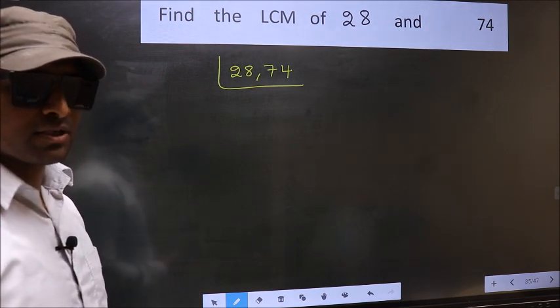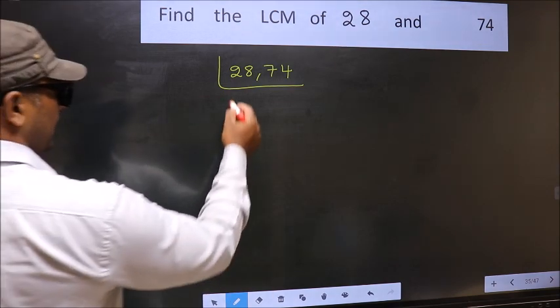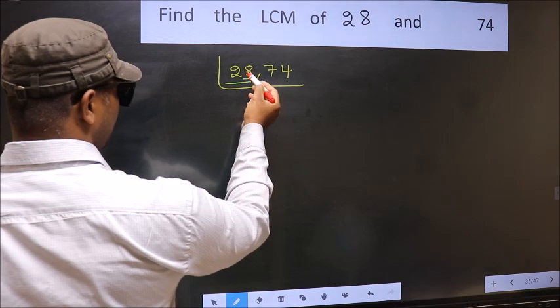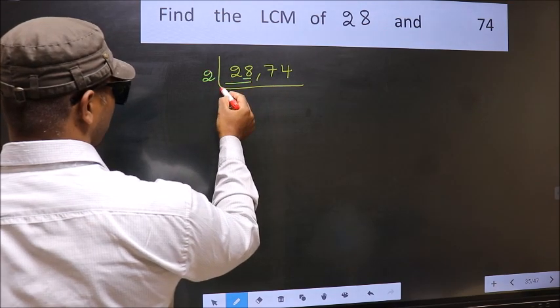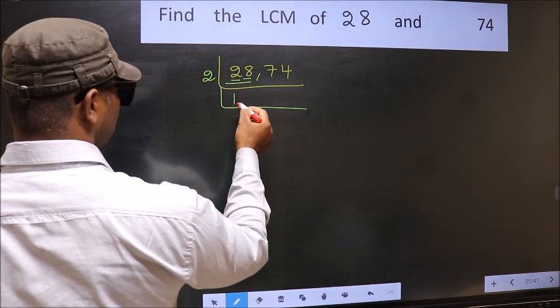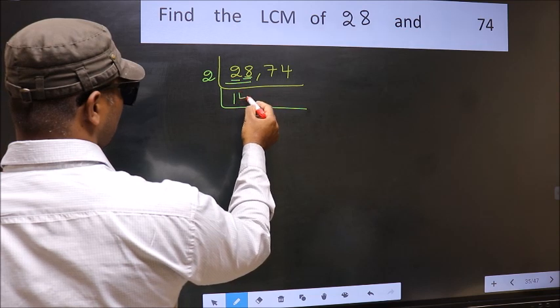Now you should focus on the first number which is 28 here. For this number, last digit 8, even, so take 2. First number 2, when do we get 2 in 2 table? 2 ones, 2. The other number 8, when do we get 8 in 2 table? 2 fours, 8.